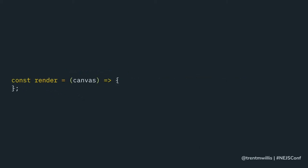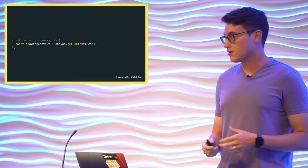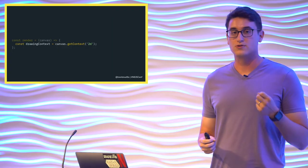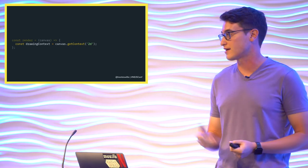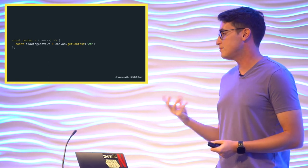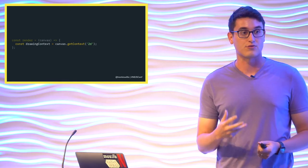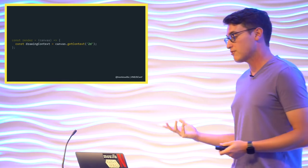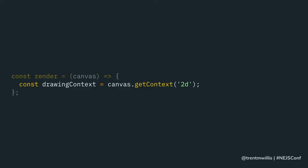Inside our render method, we take our canvas and start by getting a context from it. A drawing context is what allows you to actually modify the visual appearance of a canvas. The two most common forms are 2D (two-dimensional canvases) and WebGL. WebGL is a lot more complicated but lets you do more advanced stuff like 3D graphics. Today we're going to focus on 2D, though honestly we're not going to use that many of the context methods.